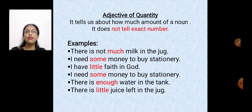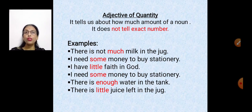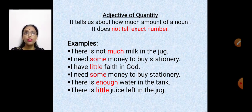'I have little faith in God' — can we measure faith? Can we tell exactly how much? We cannot. Similarly, 'I need some money,' 'there is enough water,' 'sufficient water is there' — but how many liters are in the tank? We cannot say. 'There is little juice.' All these words in red are adjectives of quantity.